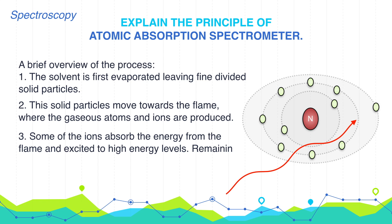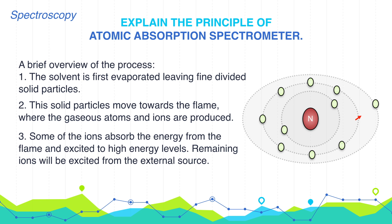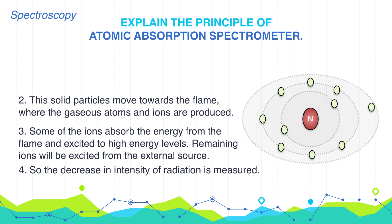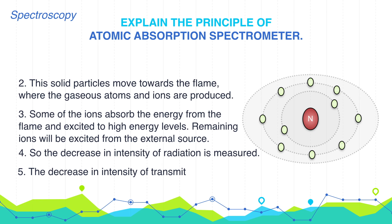The remaining ions will be excited from the external source. So the decrease in intensity of radiation is measured. The decrease in intensity of transmitted light is related to the concentration of the unexcited atoms.